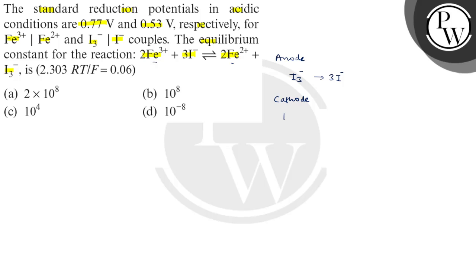The cathode is Fe³⁺ to Fe²⁺. Now we can see here I₃⁻ to 3I⁻, the net electron change. The oxidation state is minus 1/3 for each iodine in I₃⁻ and minus 1 for I⁻.